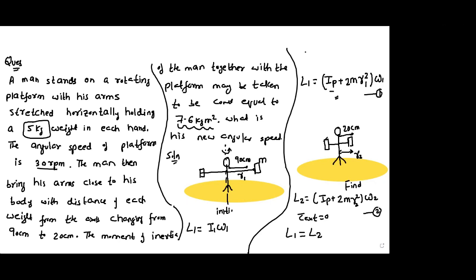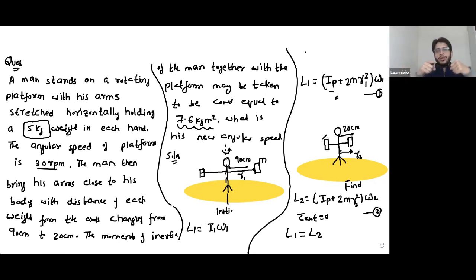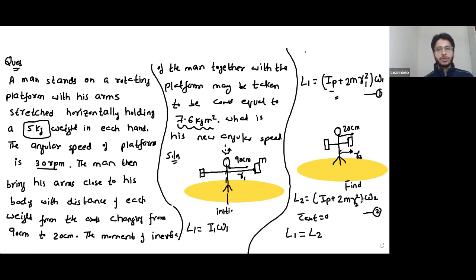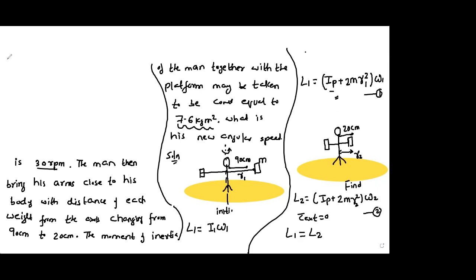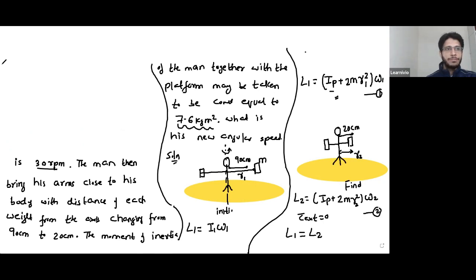The initial angular momentum is I times omega. The moment of inertia of the system is the moment of inertia of the platform plus twice of mR1 square, where mR1 square is the moment of inertia of each weight, multiplied by omega. In the final case, this man folds his hands. When he folds his hands, the separation decreases. There is no change in the platform, so the moment of inertia of the platform will not change. Just the moment of inertia of these masses will change — that is 2mR2 square — and obviously angular velocity will change.